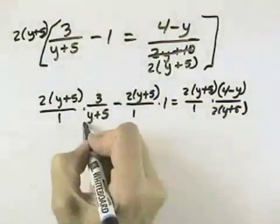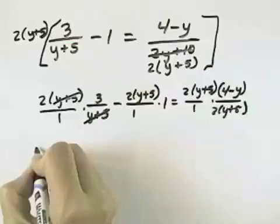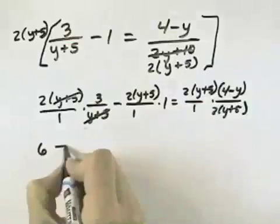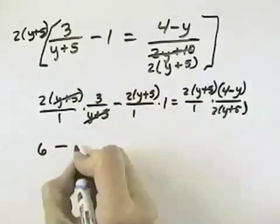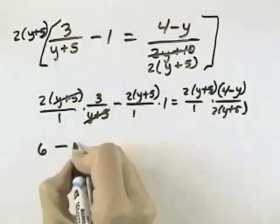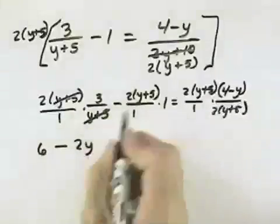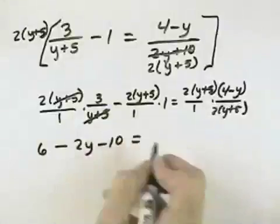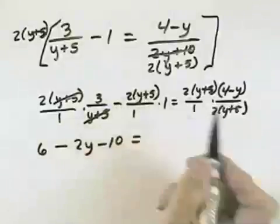So here the y plus 5 cancels in our first one, leaving 2 times 3, which is 6, minus nothing cancels here, so we're left with minus the 2y, and minus 2 times 5 is minus 10, distributing this negative through this whole product.